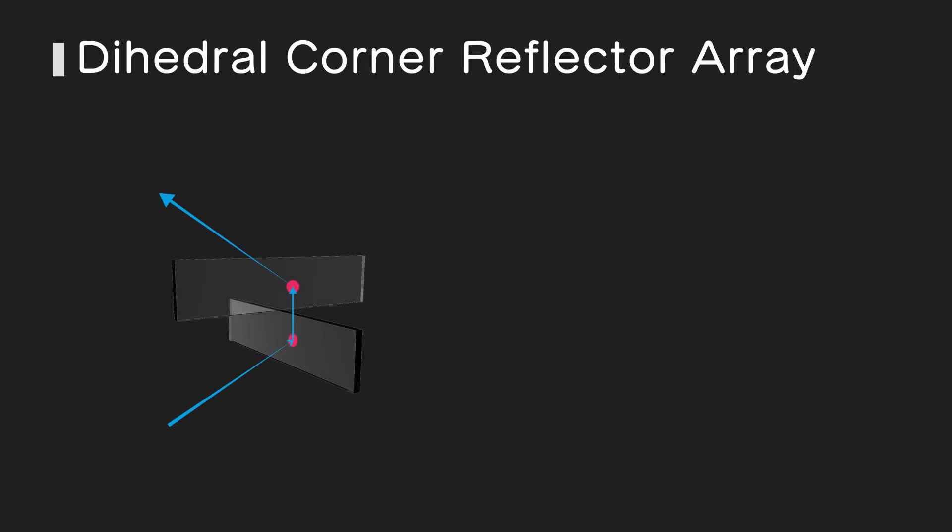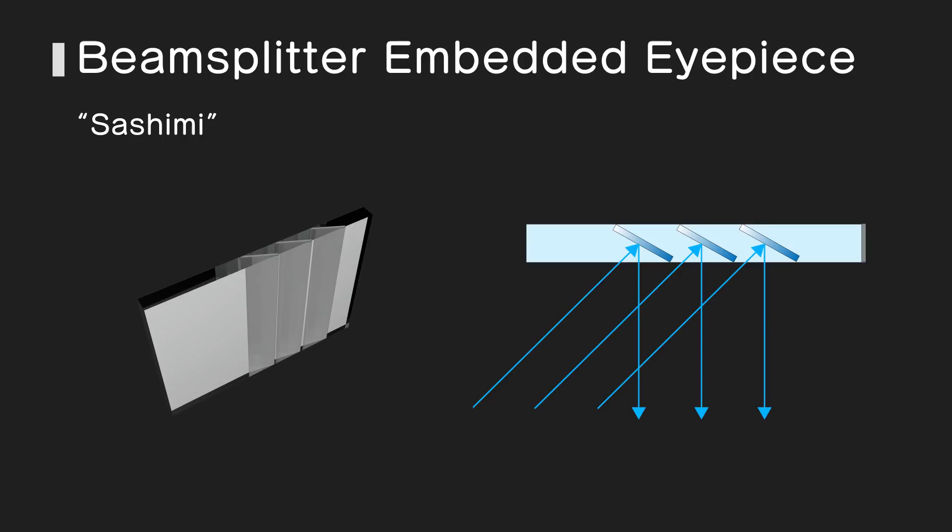The DCRA is an array of sandwich mirrors arranged perpendicularly on top of each other resulting in a larger image form at the opposite side. We use a beam splitter embedded glass we named sashimi as our eyepiece for see-through realization.